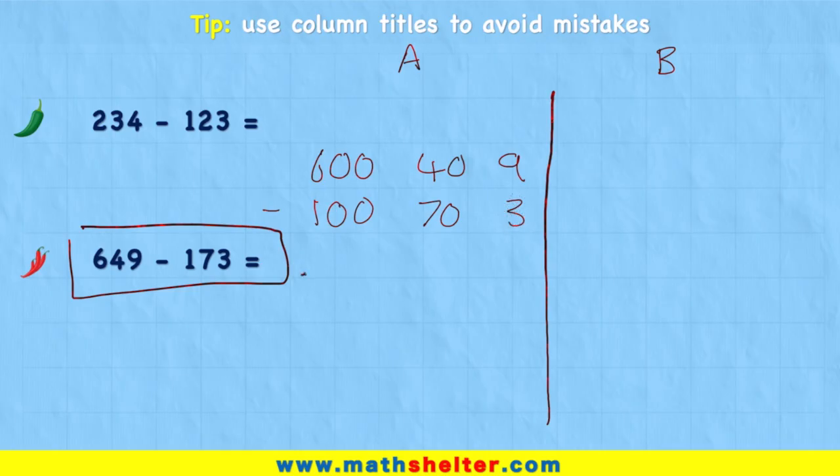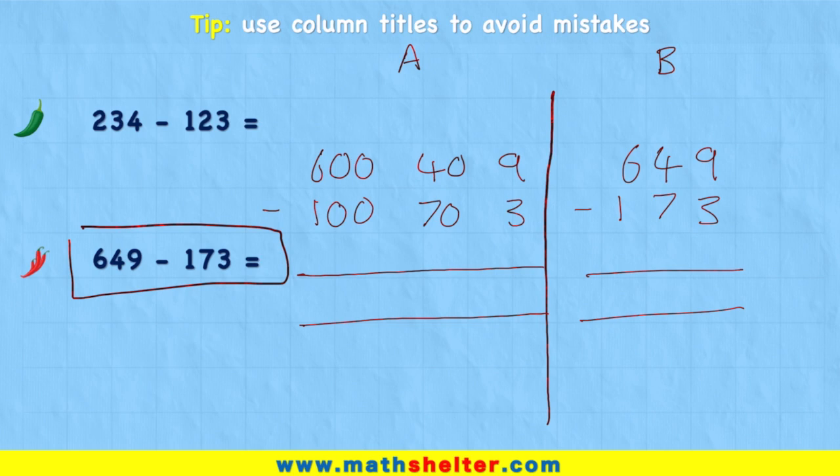So again, I've expanded, but the only difference is now I have put them into these columns, so it's starting to look like column method. Now I could compare that to the short column method, which would be on this other side, and I would just have 649 subtract 173. So now I can see I have these two different variants, type A and type B.